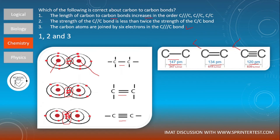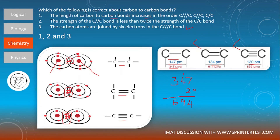For statement two, consider the bond energy. The bond energy of a single carbon-to-carbon bond is 347 kJ/mol. Multiplying by two gives approximately 694 kJ/mol. The bond energy of a carbon-to-carbon double bond is less than that value, meaning the double bond is less than twice the strength of the single bond. Statement two is also correct. All three statements are correct, so the answer is one, two and three.